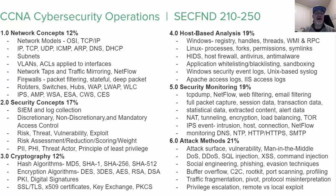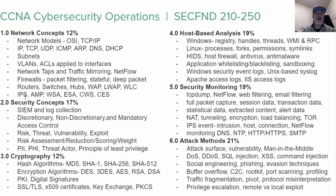You also need to know NetFlow and firewalls. Packet filtering firewalls filter at layers one, two, and three. Stateful firewalls can filter up to layers four and five and keep track of TCP conversations and session state. Deep packet inspection can filter and see application layer data. Basic devices include a router, switch, hub, wireless access point, lightweight access point, and wireless LAN controller, as well as security devices like IPS/IDS, AMP, web security appliance, email security appliance, and cloud versions of those.